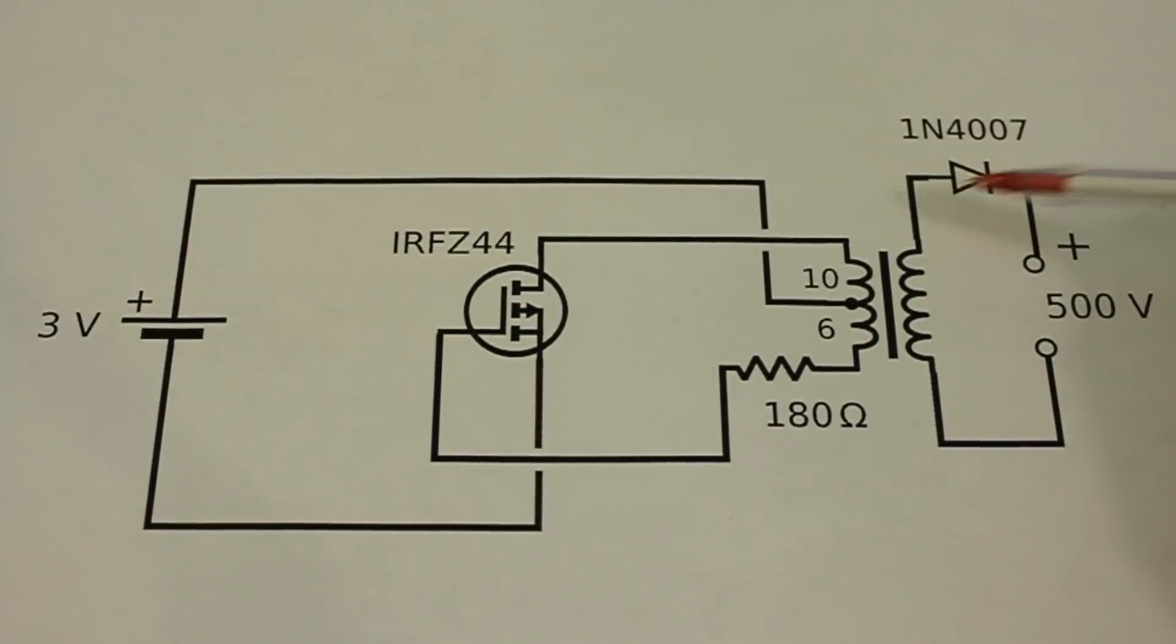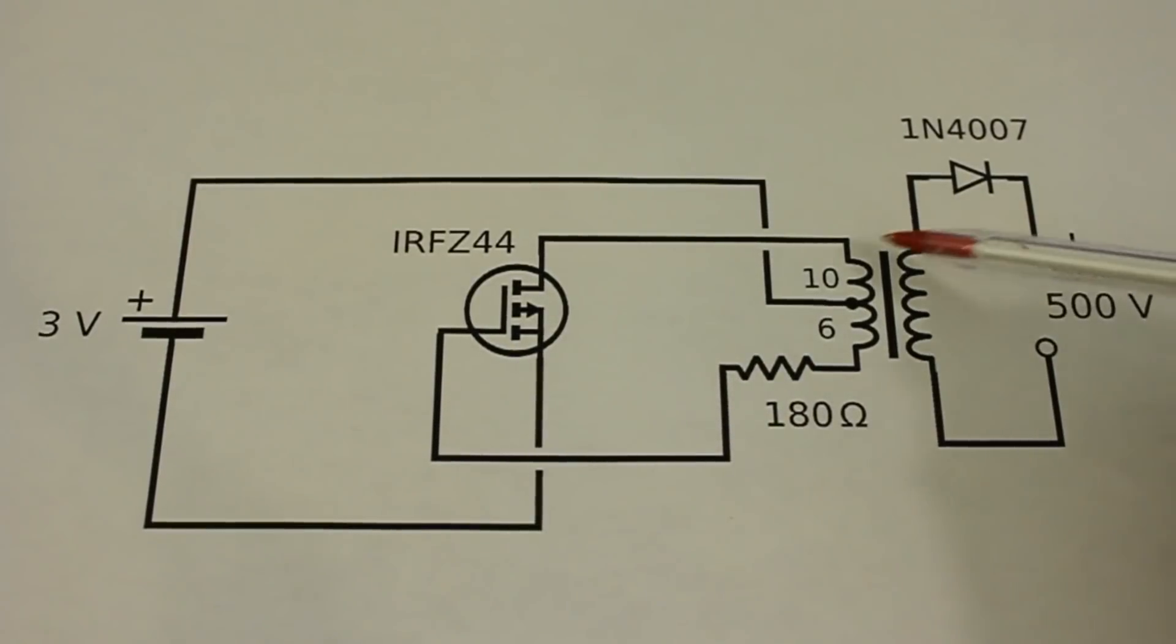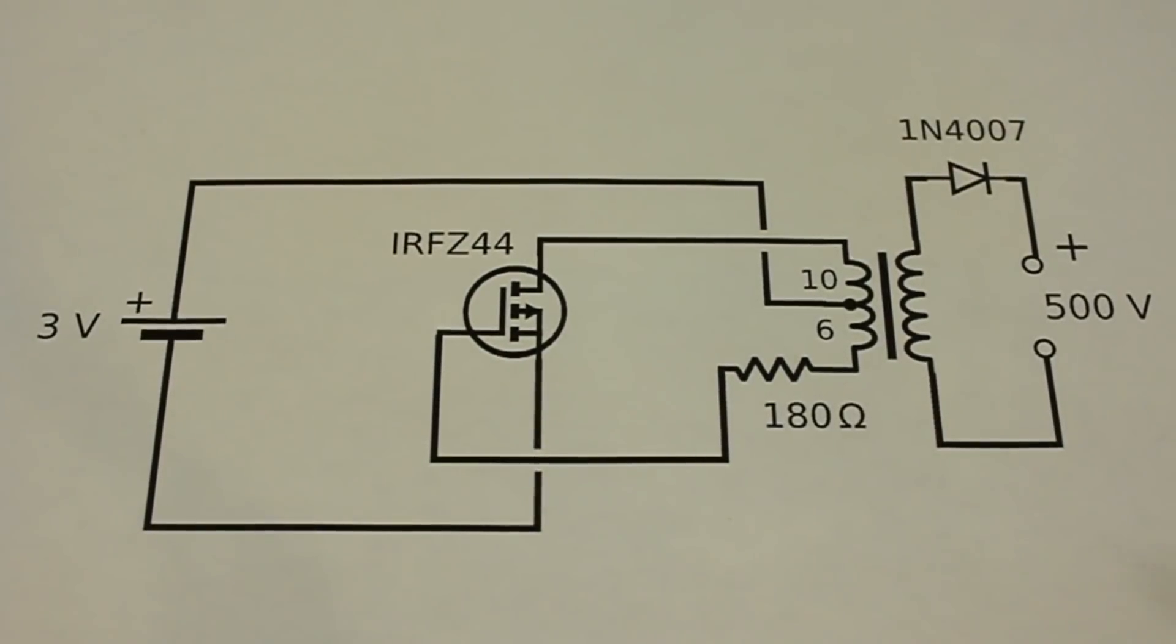This diode is optional. You need the diode if you want DC at the output. Without the diode you will get AC. A resistor and this little transformer that we will see how to build. This is an oscillator that works in the following way...